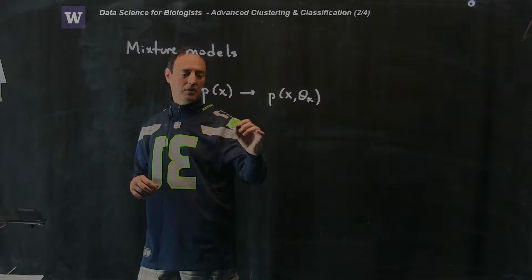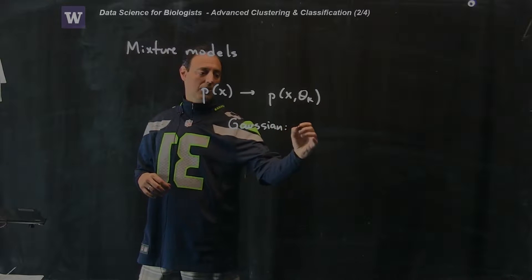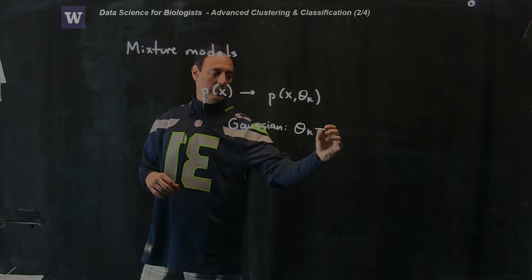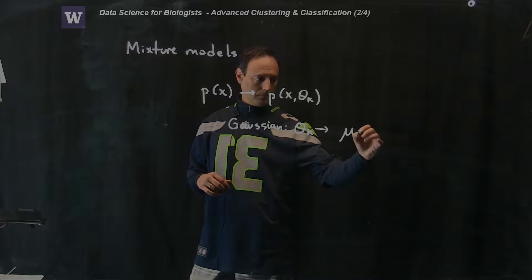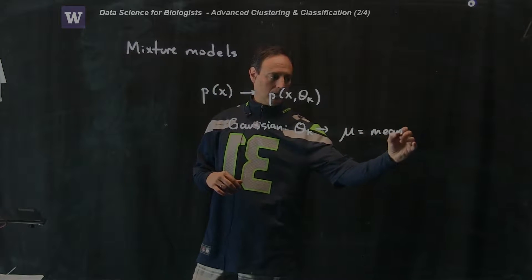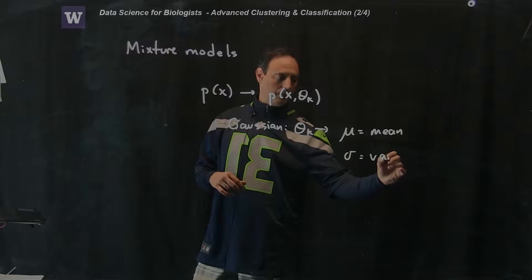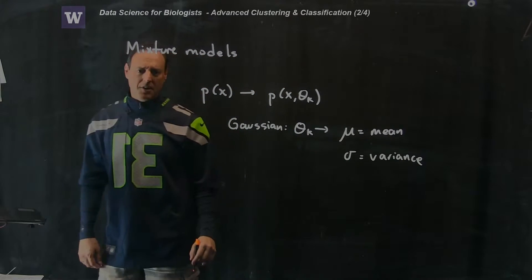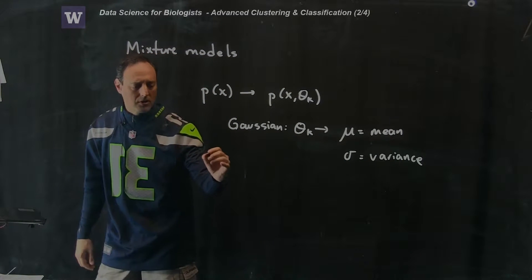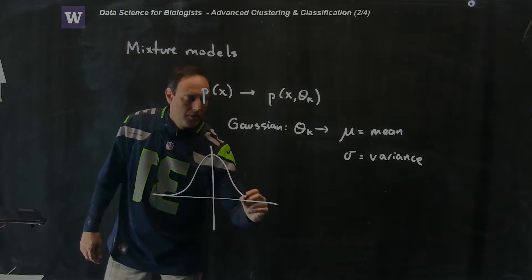So if you're Gaussian, then this theta k really is looking at two things: some mean and some variance. And the Gaussian distribution gives us something that we've known for a long time, which is the Bell curve.